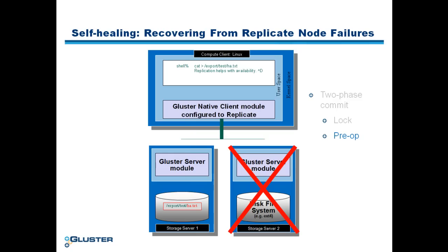We then execute the pre-op, during which transaction change logs are created. The client sends this operation to each server in the replicate set. On each running server in the set, the change log marks the file as having operations — the actual data write — pending upon itself as well as upon all other servers in the replicate set, by utilizing the file's extended attributes. In our scenario, since server 2 is down, no file or change log will be created on disk on server 2.